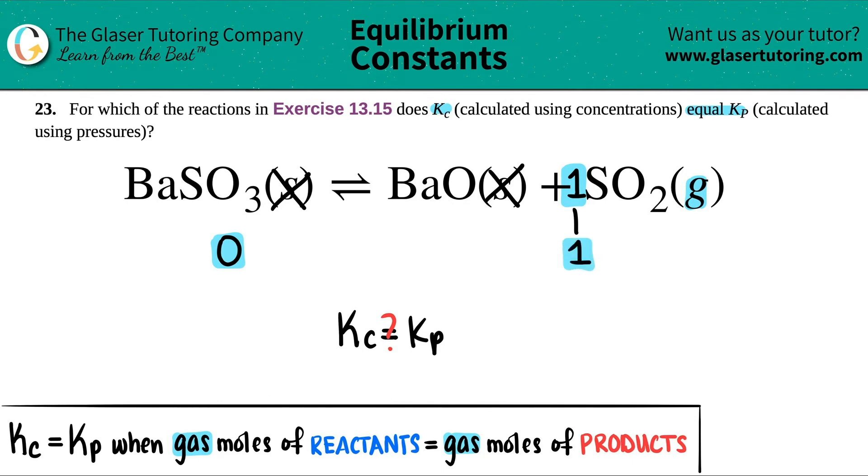Now let's see. If Kc equals Kp, the moles of gas have to equal each other, but zero does not equal one. So to answer this question, does the Kc equal the Kp? No. Because those moles of gases are not the same on the reactant and the product.